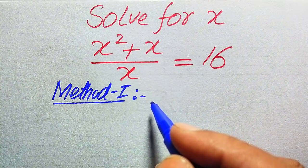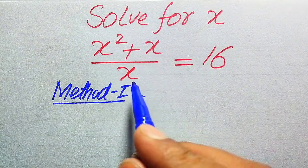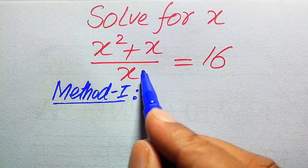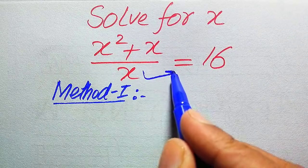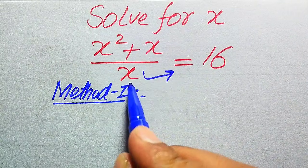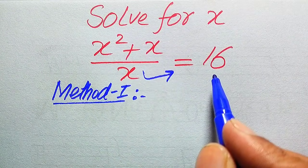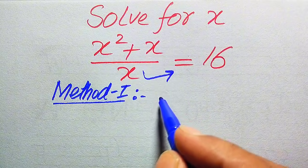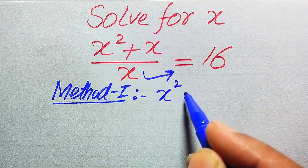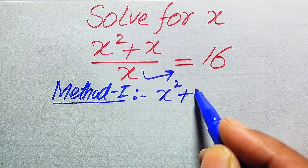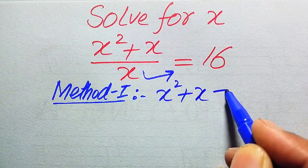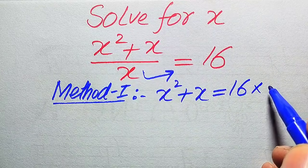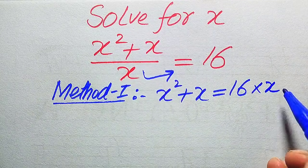Now we move to the first method. Here, the x in the denominator — we move it to the right hand side where it becomes a multiplier, giving us x squared plus x equals 16x.